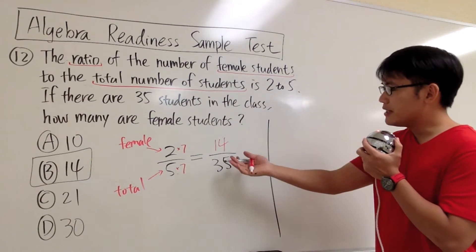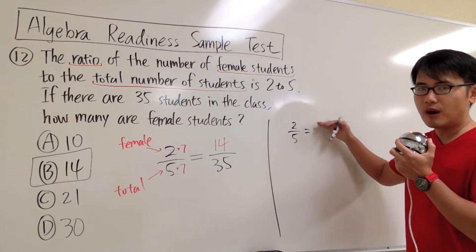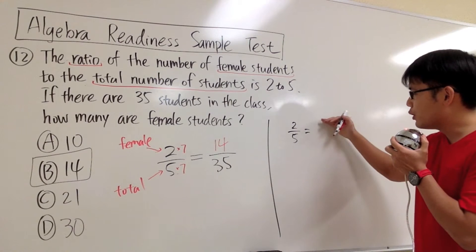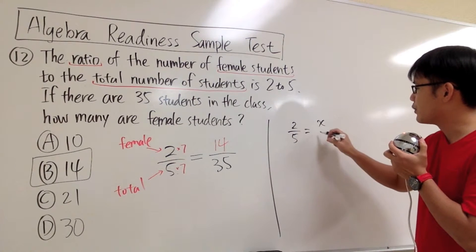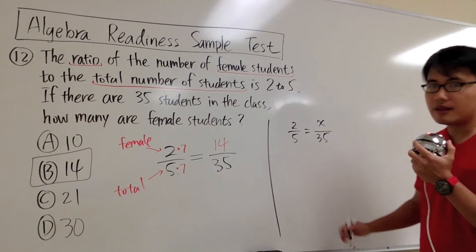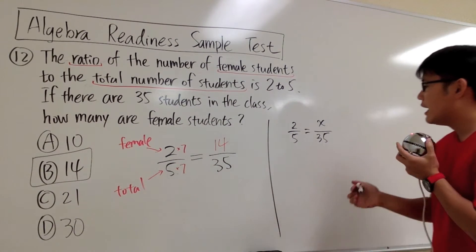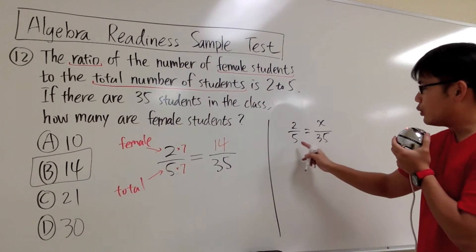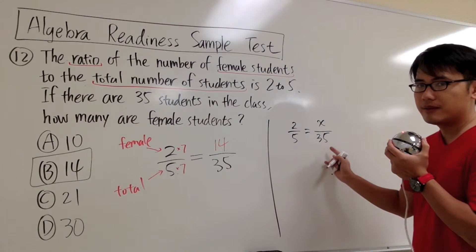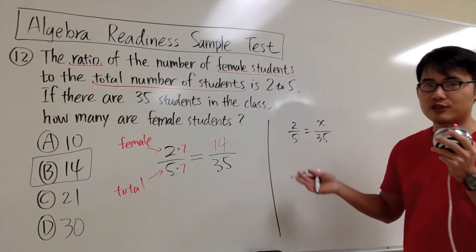Same setup. Earlier we have 2 over 5 equals question mark over 35. But instead of question mark, let me put down x for this. Over 35. So in algebra, we put down x for the unknown instead of question marks. When we have 2 fractions equal to each other, we know that we can cross multiply, and then we don't have fractions anymore.